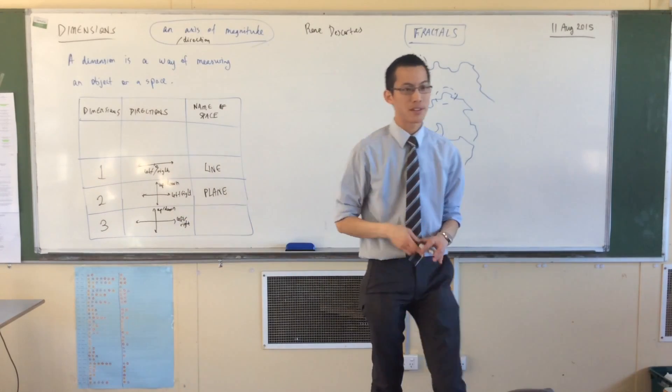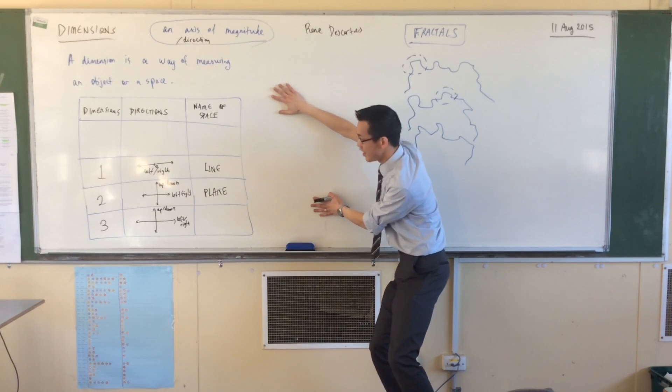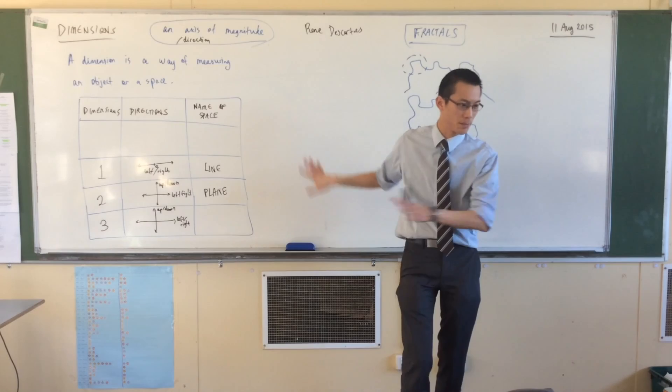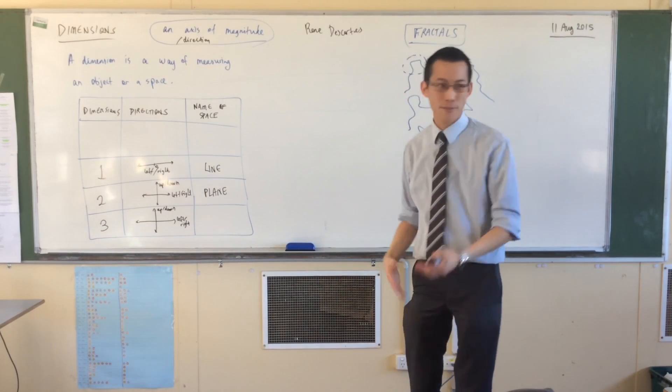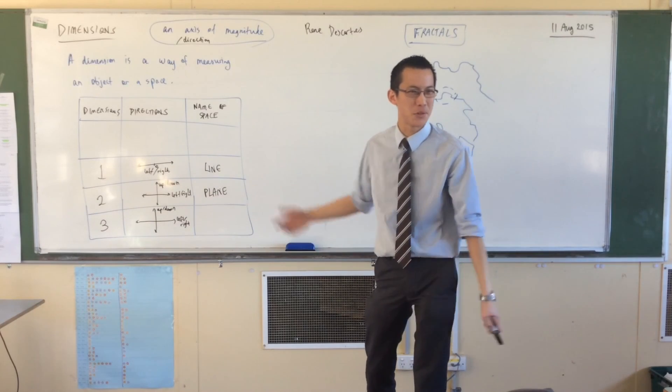Now, this is where the whiteboard and your book is going to fail us at the moment, because what we're drawing on is a plane. We're drawing on a two-dimensional space. I've got the board, you've got the book. So, unfortunately, we can't draw a real three-dimensional space, but we can pretend to. How would you draw it?